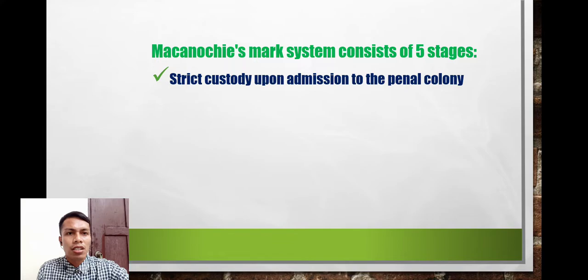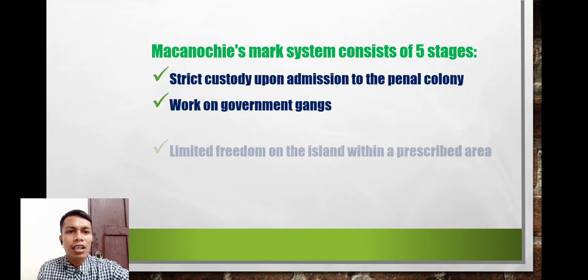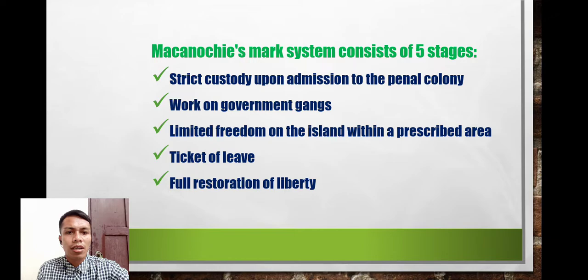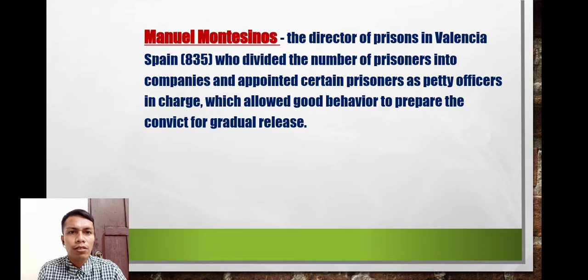The Maconochie mark system consisted of five stages: first, strict custody upon admission to the penal colony; second, work on government gangs; third, limited freedom on the island within a prescribed area; fourth, ticket of leave; and fifth, restoration of liberty.